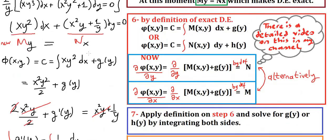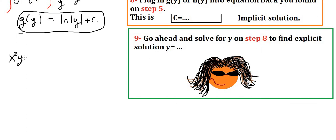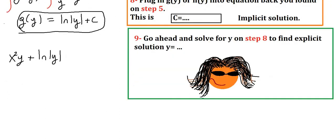So now we know g(y) = ln(y). We plug this back into our φ function: φ(x,y) = x²y²/2 + g(y). So our implicit solution is x²y²/2 + ln(y) = c.